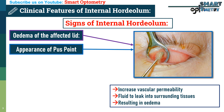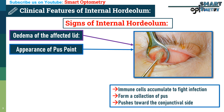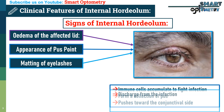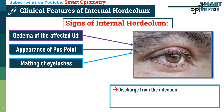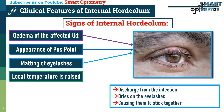2. Appearance of pus point — as immune cells accumulate to fight the infection, they form a collection of pus that pushes toward the conjunctival side. 3. Matting of eyelashes — discharge from the infection dries on the eyelashes, causing them to stick together.